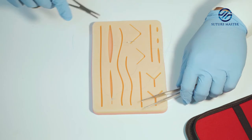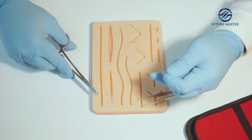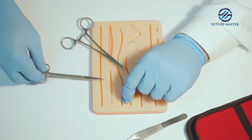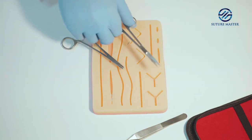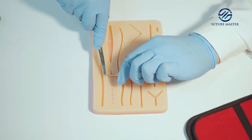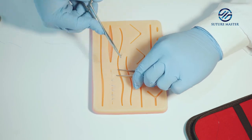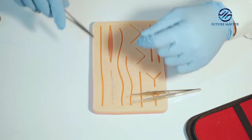To make the knot, loop the suture around the needle holder three times, then grasp the suture end. Now loop the suture back towards you around the needle holder twice, and finally loop the suture around the needle holder one more time.